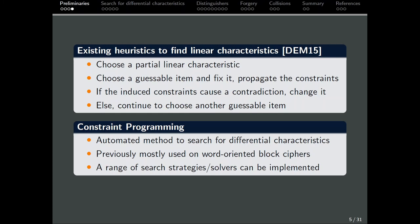Now, we can actually draw parallels between this dedicated heuristic and what constraint programming is doing. This is also why we think that using CP can help in the case for ASCON as well. So, here is a short introduction to CP. CP is a form of automated method that is used to solve a wide range of combinatorial problems. In the case of cryptography, it has been used mostly to find differential characteristics on word-oriented block ciphers. In addition to that, there are a range of solvers along with their own search techniques and strategies available that can be used to get the best one for each use case.